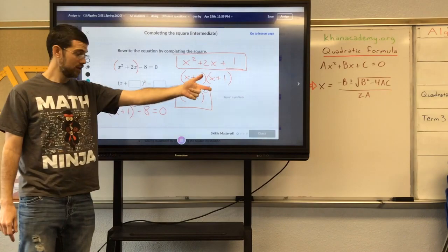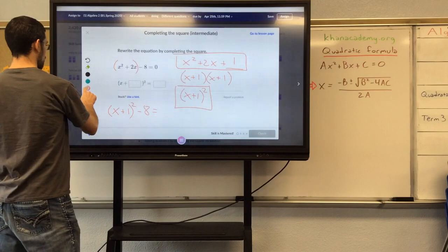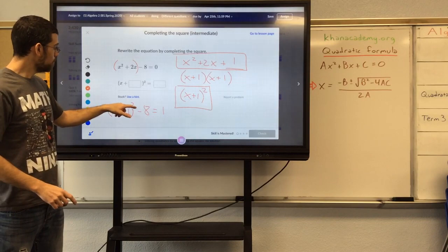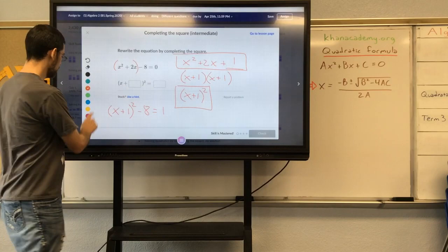In order to account for that, I should also add 1 to the other side of my equation. So instead of having it equal 0, I should have it equal 1. That's one way to think of this. So now I have x plus 1 squared minus 8 equals 1.